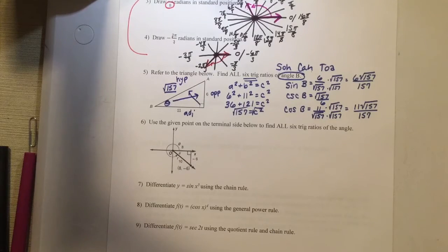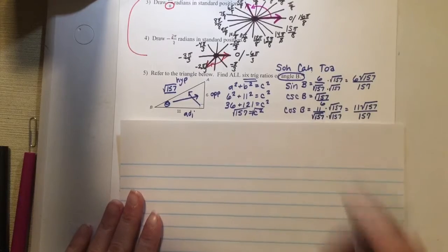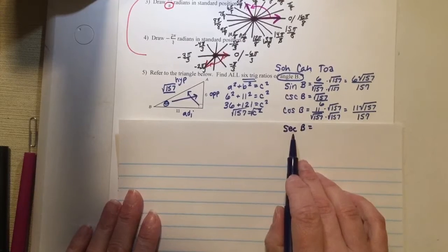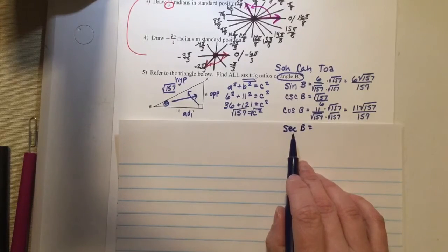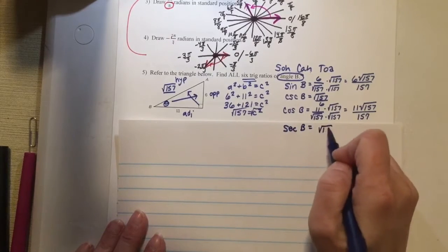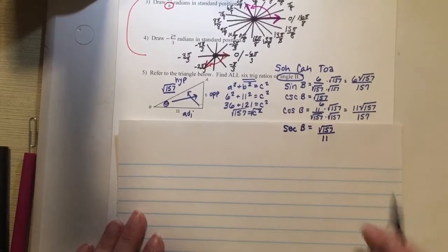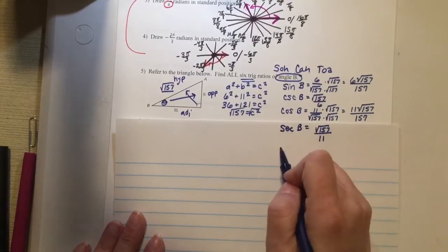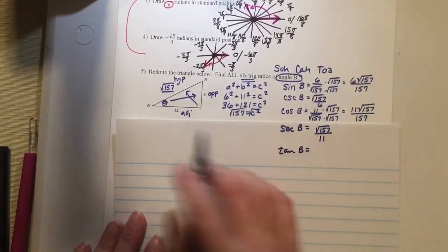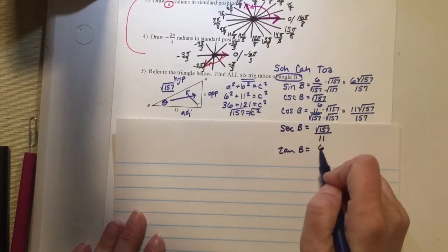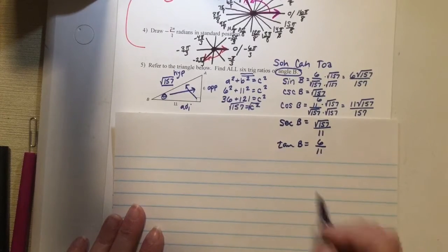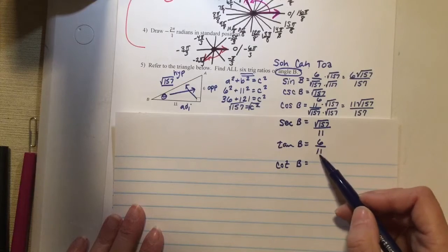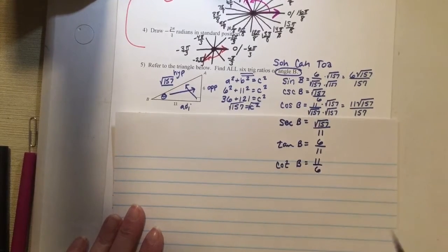We're going to keep going — we're halfway done. There are six functions. The secant of B: the secant is the reciprocal of the cosine. So if the cosine is adjacent over hypotenuse, the secant is hypotenuse — square root of 157 — over the adjacent. That is fine the way it is; I don't have to do anything else with that solution. Now the tangent of B: tangent is opposite over adjacent, so it's 6 over 11 — that is fine. The reciprocal of the tangent is called the cotangent; so instead of 6 over 11, it is 11 over 6.